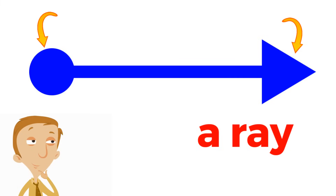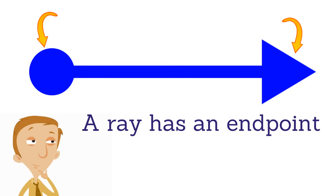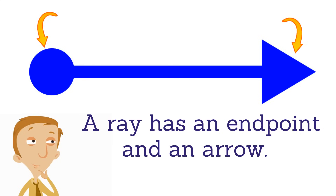A ray has a dot on the other side — an endpoint, like a line segment. A ray has an endpoint and an arrow. A ray is a combo — it has both.